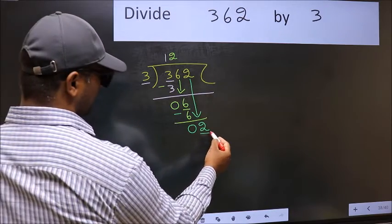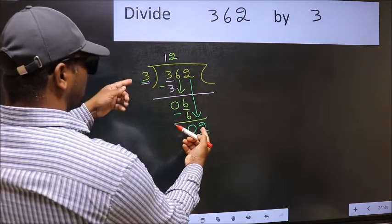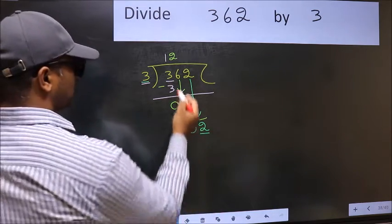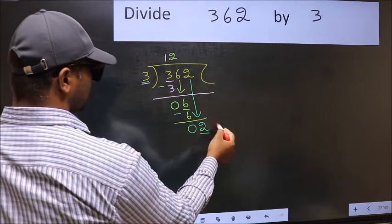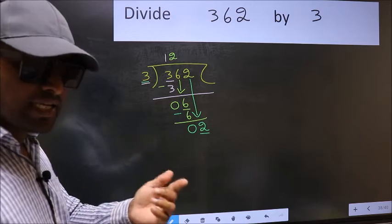Here we have 2, and here 3. 2 is smaller than 3. So what many do is they directly put a dot and take 0, which is wrong. Why is it wrong?